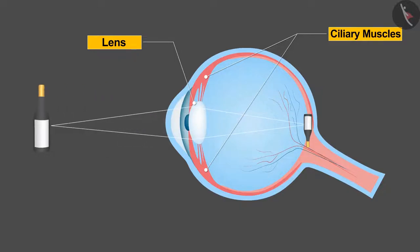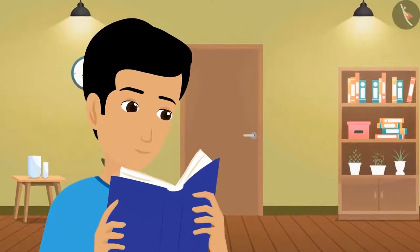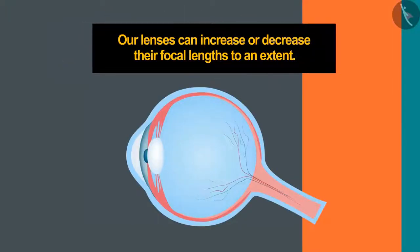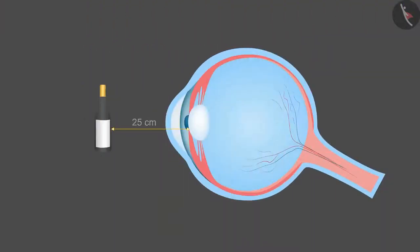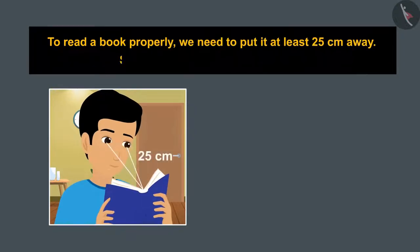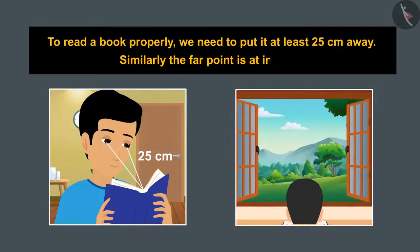You must have noticed that you can't read while keeping a book very close to your eyes. Why is it so? Because our lenses can increase or decrease their focal length to an extent. For a normal eye, this distance is 25 centimeters which is called near point. To read a book properly we need to put it at least 25 centimeters away. Similarly, the far point is at infinity.